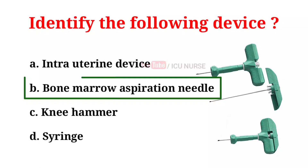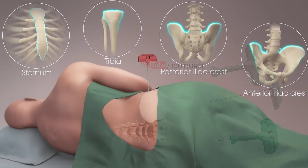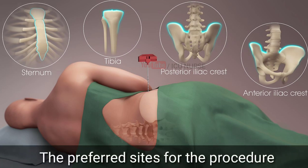B. Bone marrow aspiration needle. A bone marrow aspiration removes only the marrow. These tests are often done to find the reason for many blood disorders and may be used to find out if cancer or infection has spread to the bone marrow. Bone marrow aspiration removes only a small amount of bone marrow fluid and cells through a needle put into a bone.